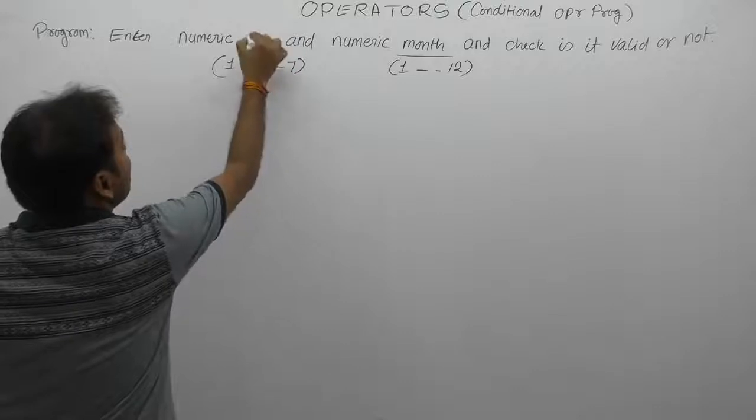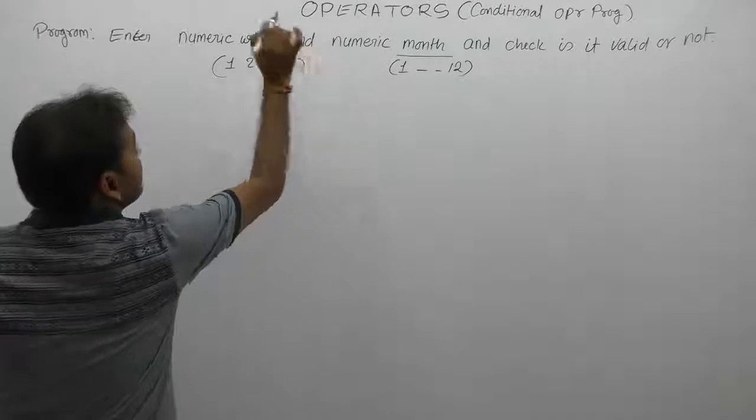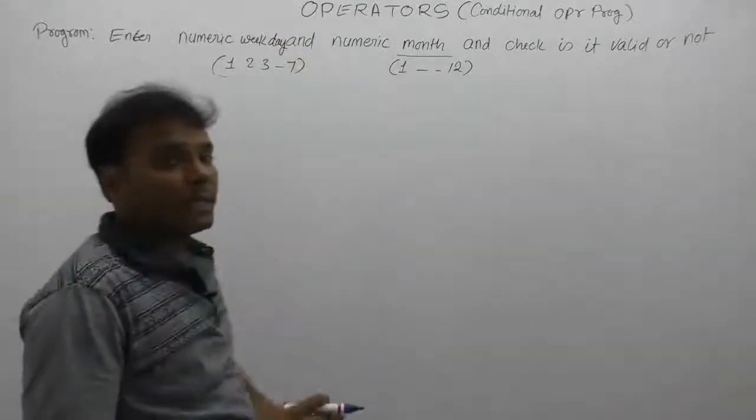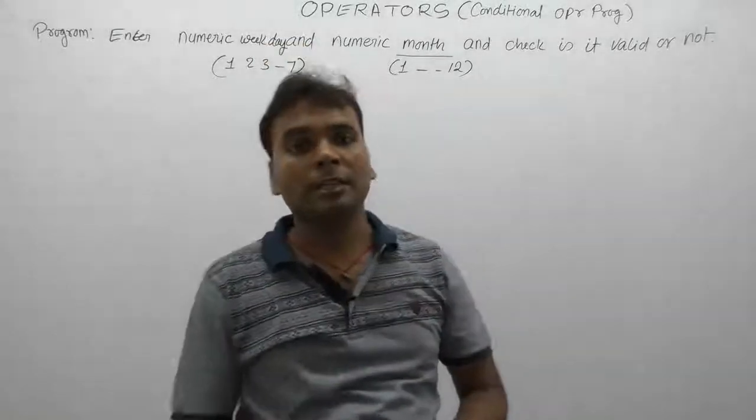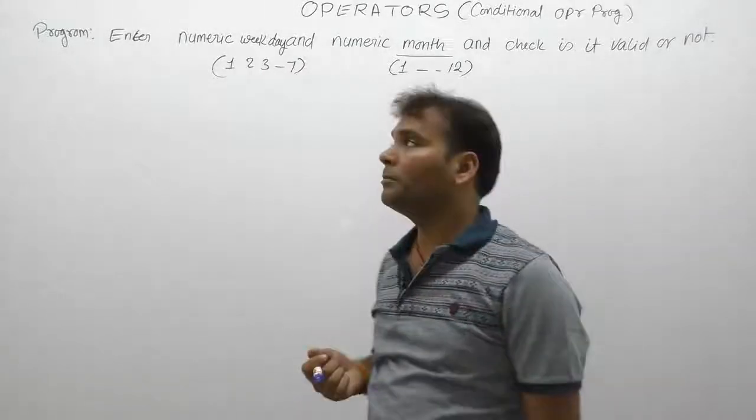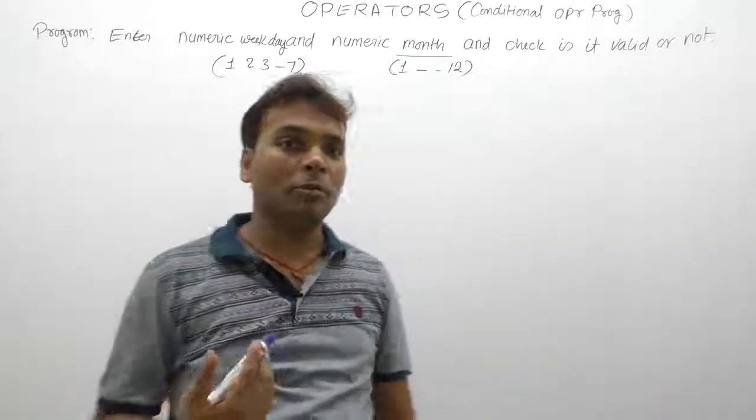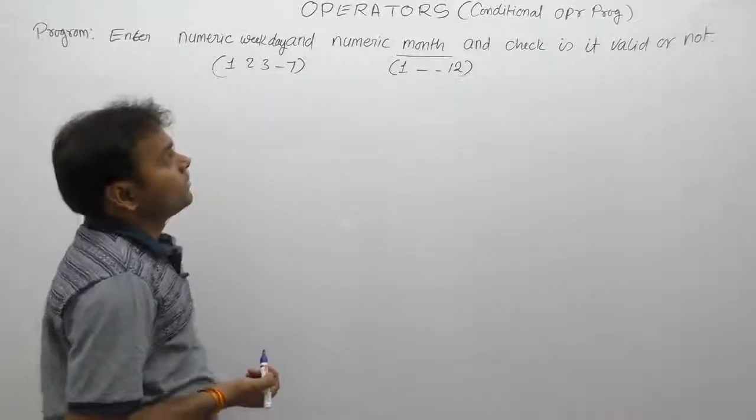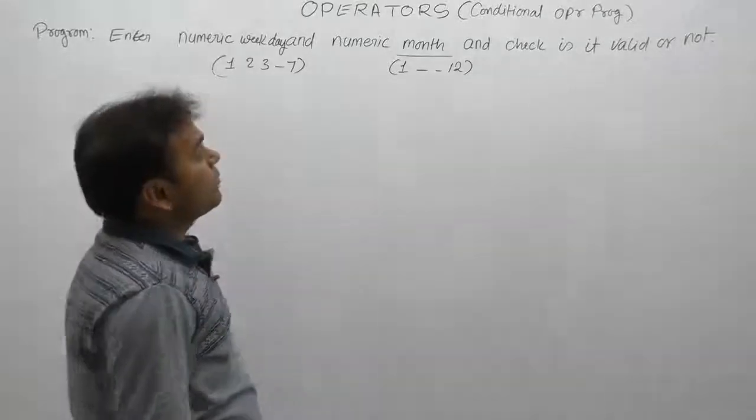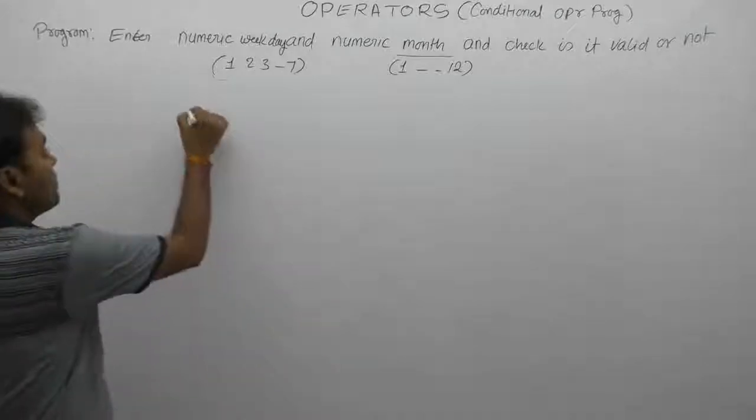Maximum days are seven days, between one to seven. Same as any year, maximum months are only 12 months, ranging from one to twelve. How many variables are required to solve this problem? Only two variables: day and month. Let's write this program.